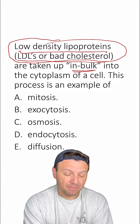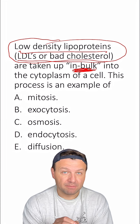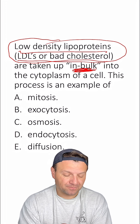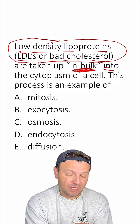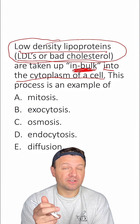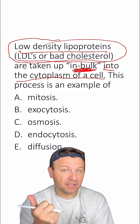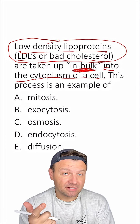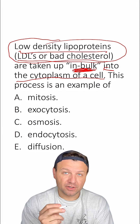"Are taken up in bulk." When things are taken up in bulk, they're usually done through active transport into the cytoplasm of the cell. So we're looking for something that's active transport and it's something that's going into the cell.